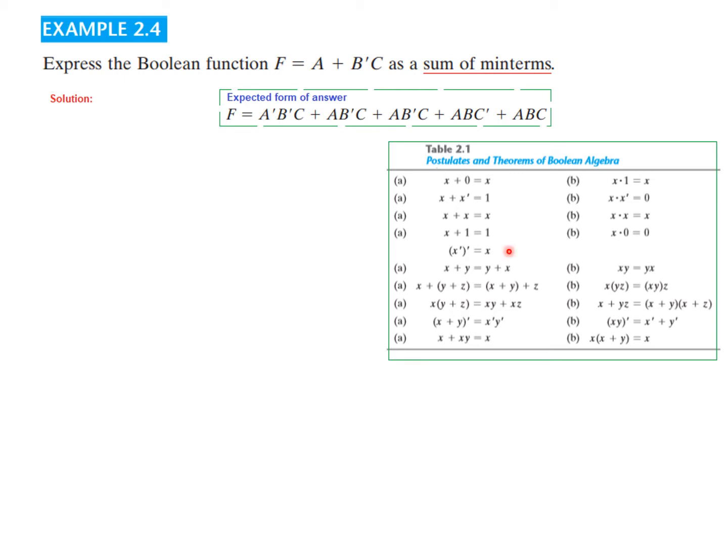We'll take help of this table for solving this problem. Now the function has three variables as you can see: A, B, and C. The first term A is missing two variables. So this A is alone here. So we got to incorporate B and C. Let's see how it is done.